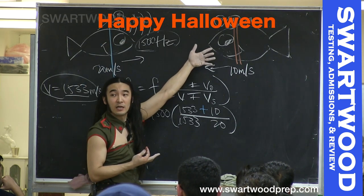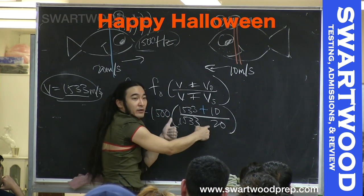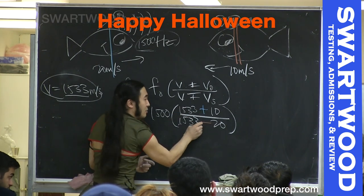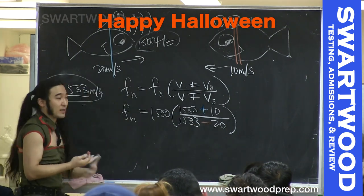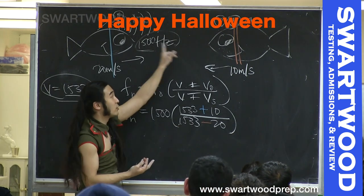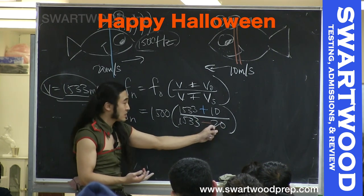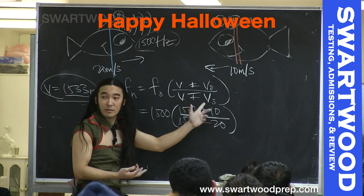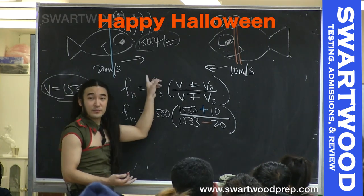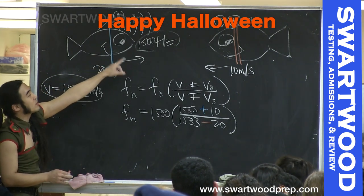Now do the source: freeze the object. The source is going towards you, so frequency should go up. But the source velocity is on the bottom of the fraction — if you make the bottom bigger, the result goes down, not up. So you need a minus sign to make the bottom smaller, which makes the result go up. The shortcut: top is straightforward, bottom is always a flip. Bigger bottom means smaller number; smaller bottom means bigger number. This will always work.